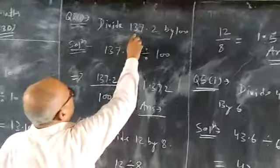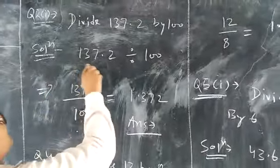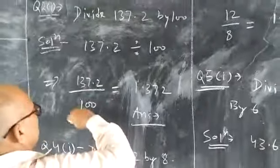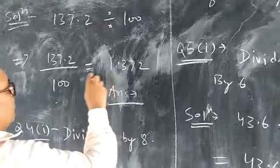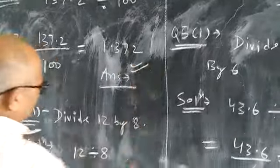First, divide 137.2 by 100. Its solution is 137.2 divided by 100, it will be equal to 137.2 upon 100, it will be equal to 1.372. That is the correct answer.